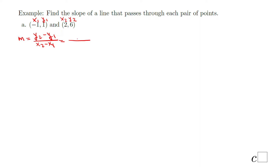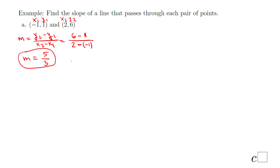So we have y2 minus y1, that will be 6 minus 1, and x2 minus x1, that is 2 minus negative 1. Six minus 1 is 5, and 2 minus negative 1 is positive 3. The slope is 5 over 3, a positive slope. If we plot those two points, I expect to get a line that goes up from left to right, because the slope is positive.